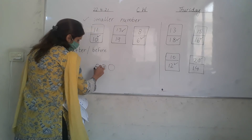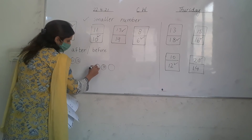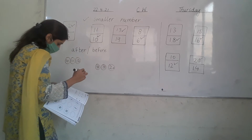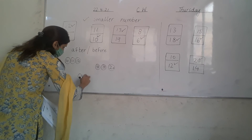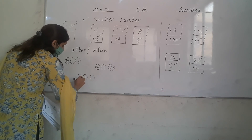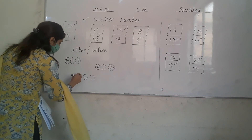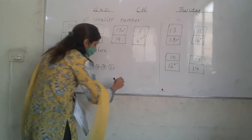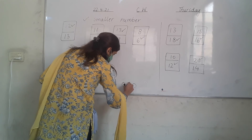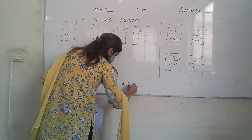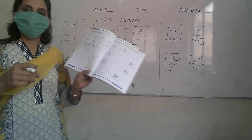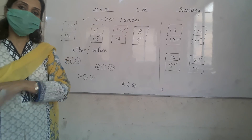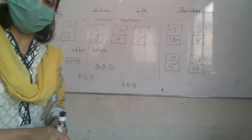We have number 19. What comes before 19? 18. 18, 19, 20. We have number 6. What comes before 6? 5. 5, 6, 7. We have number 14. What comes before 14? 13, 14, 15. This is your classwork page and you have to do it neatly and nicely in your classwork. Very good.